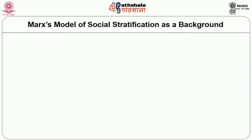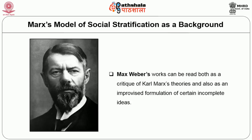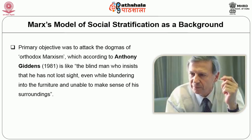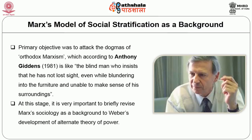As background, we consider the Marxist model of social stratification. Max Weber's work can be read both as a critique of Karl Marx's theories and as an improvised formulation of certain incomplete ideas. His primary objective was to attack the dogmas of orthodox Marxism, which according to Anthony Giddens is like a blind man who insists he has not lost sight, even while blundering into furniture and unable to make sense of his surroundings. It is important to briefly revise Marxist sociology as background to Weber's development of an alternate theory of power.